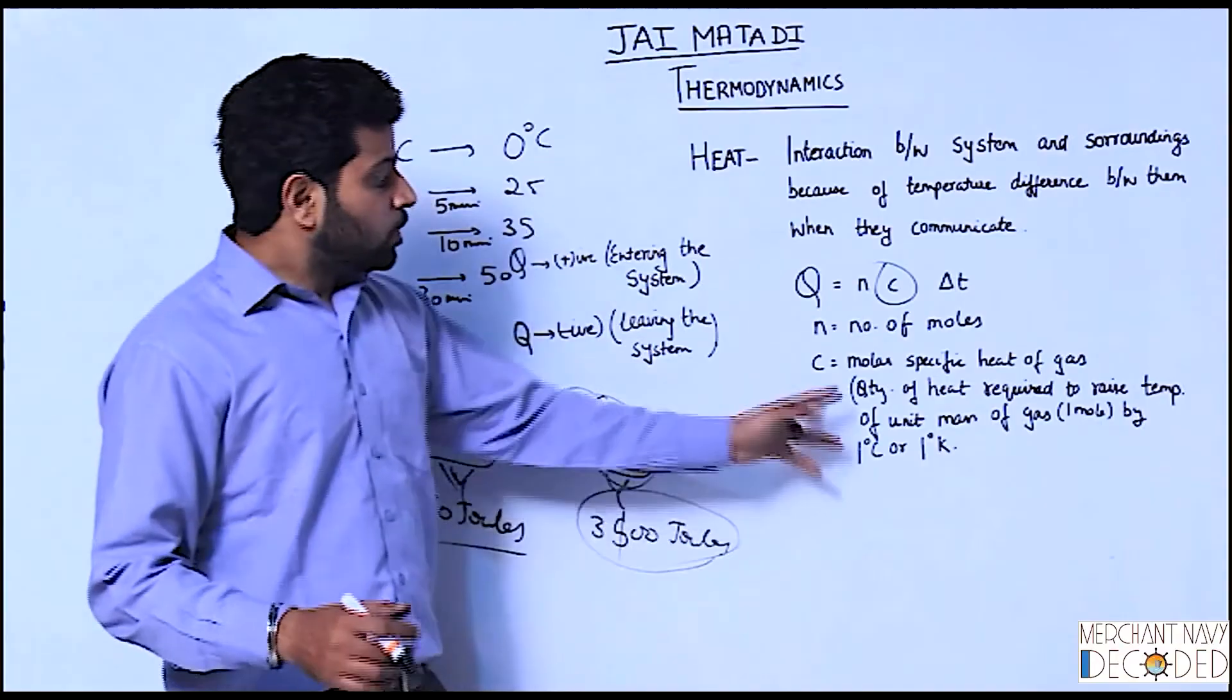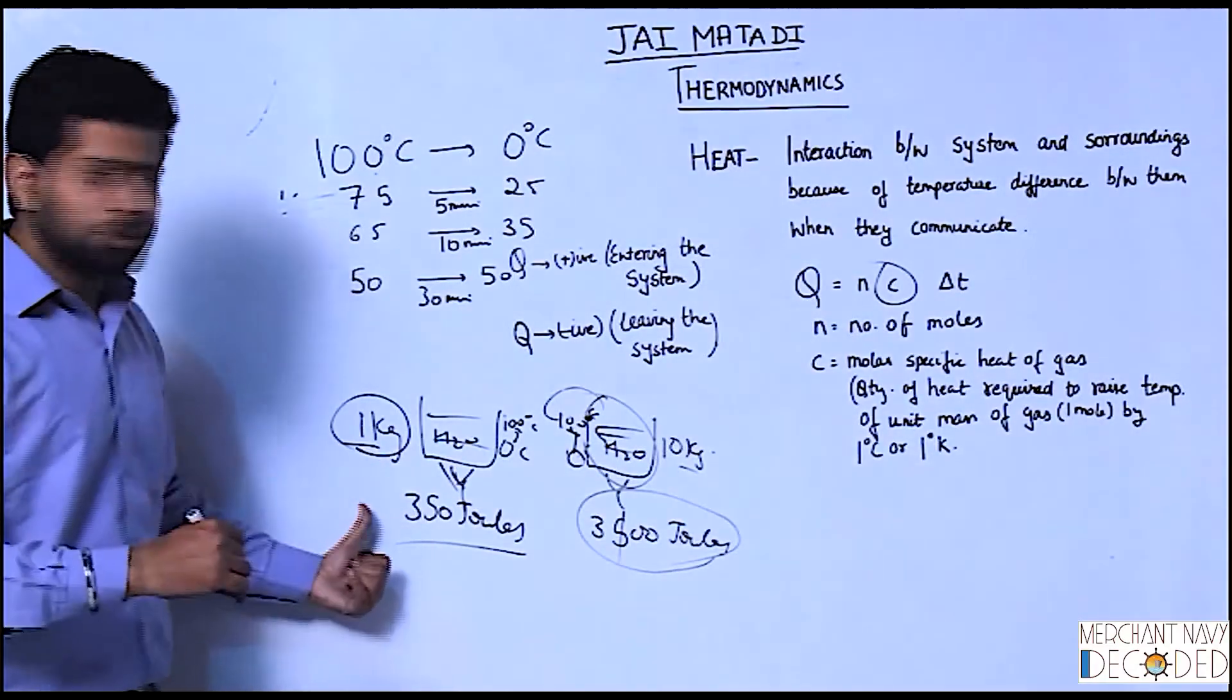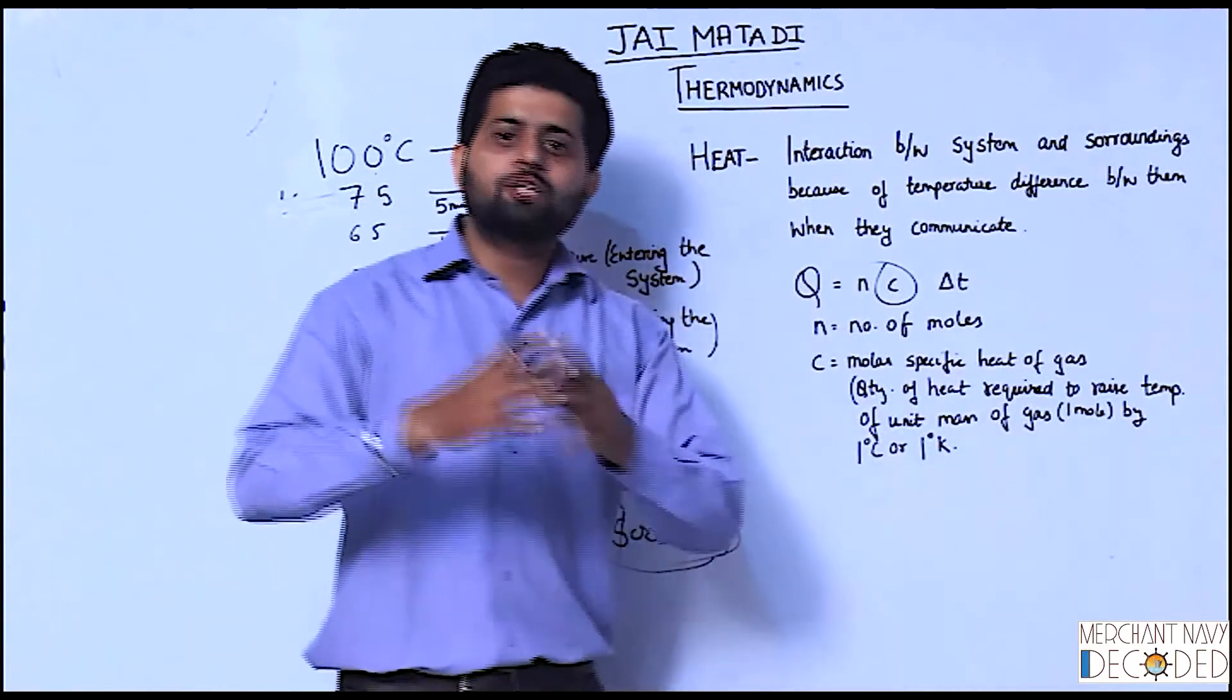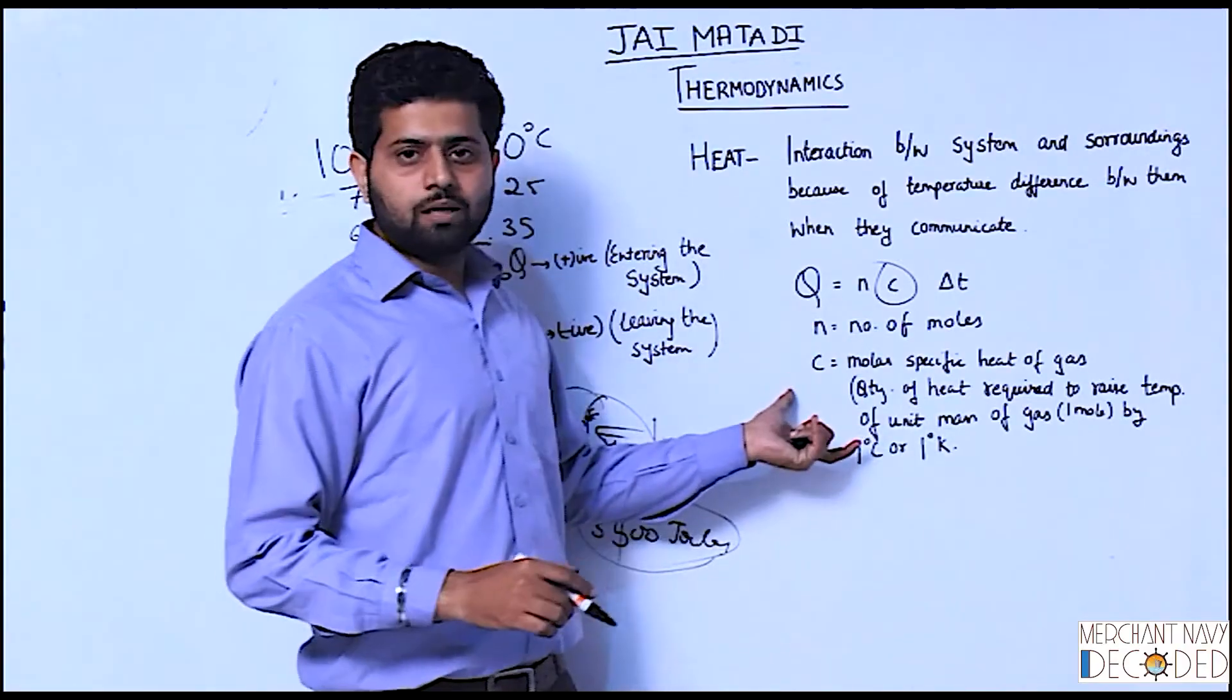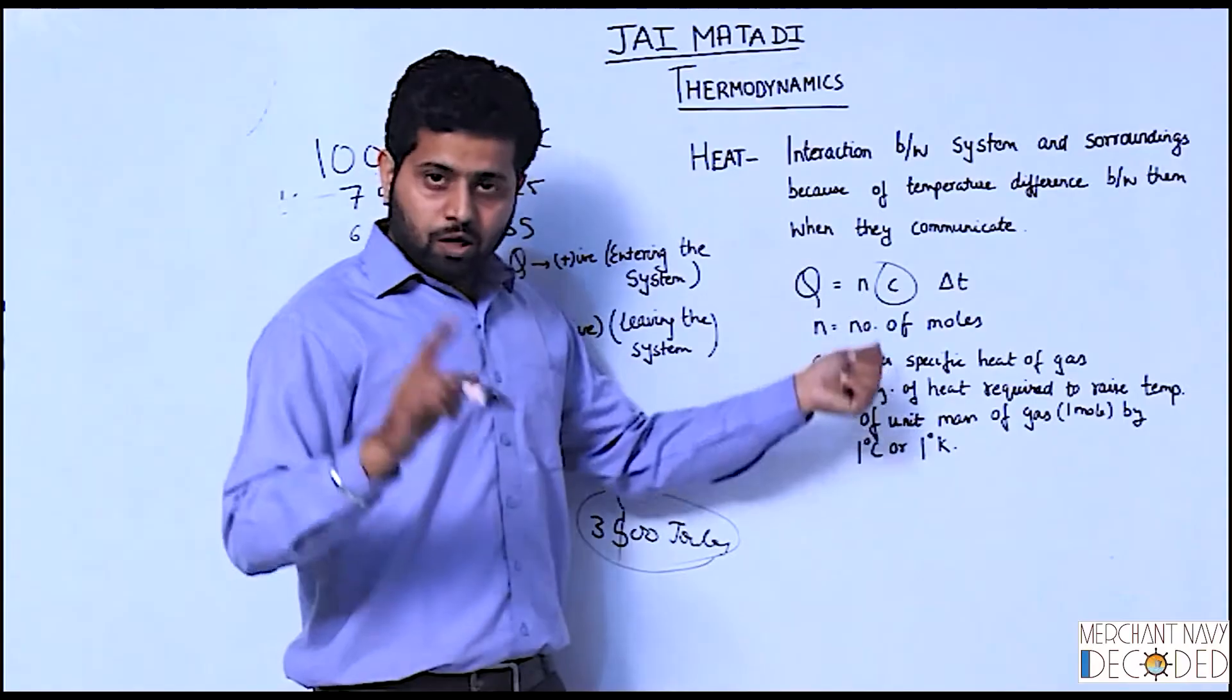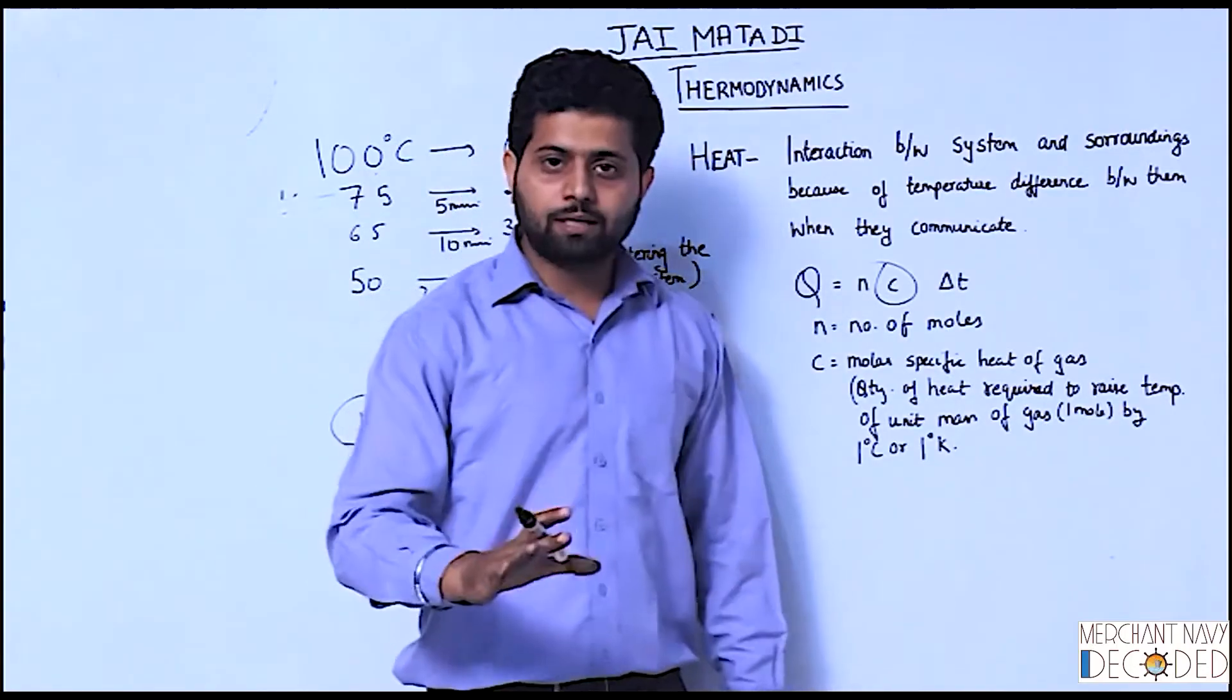So what is it? Quantity of heat required to raise temperature of unit mass, say 1 kg, by 1 degree centigrade. In case of gas, it is 1 mol. So it is like unitary method. If 1 degree centigrade increase for 1 kg requires this much heat, if it is 10 kg, multiply by 10. Now, if I have to raise it by 20 degrees, then I have to multiply by 20 degrees. Confused? Okay, I will repeat it again.